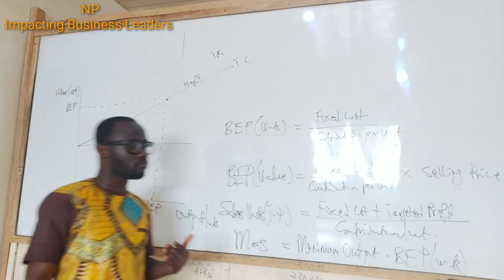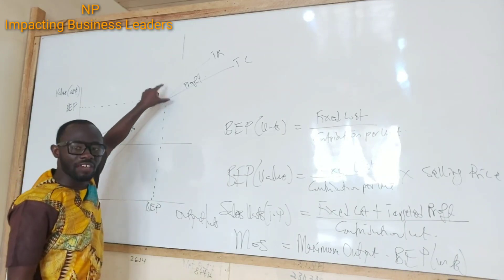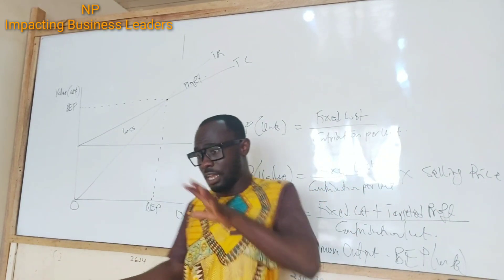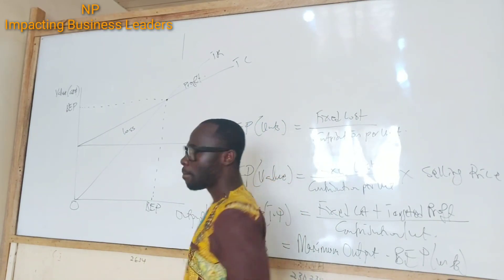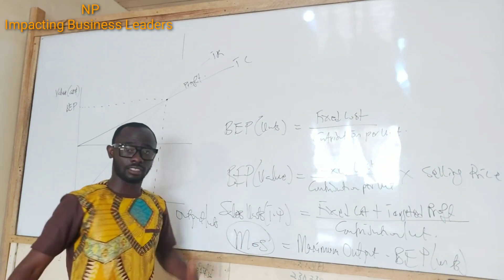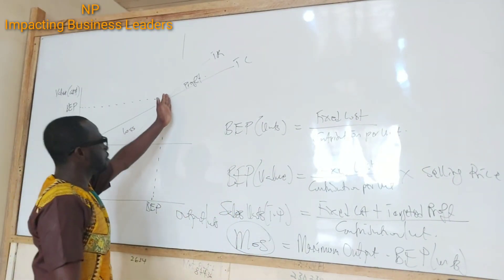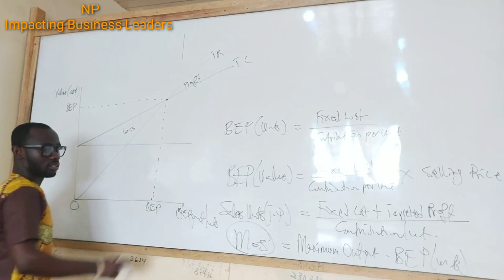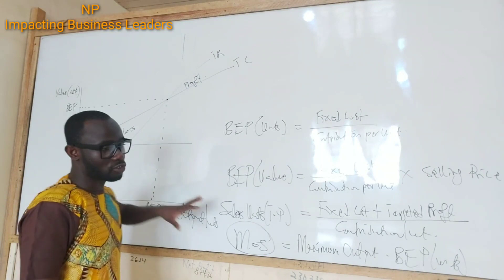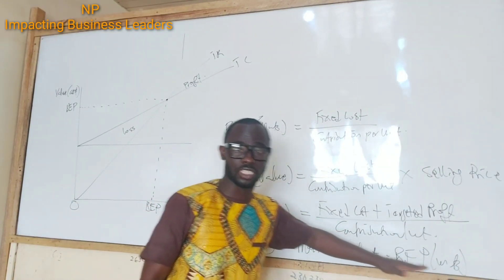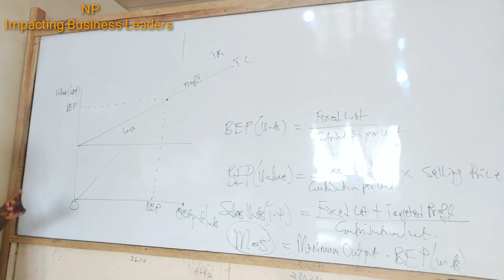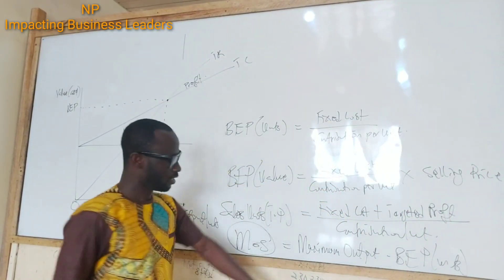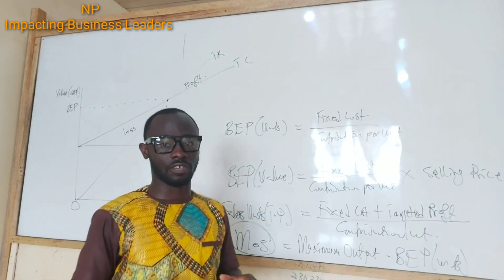The sweet spot is the region referred to as the MOS — the margin of safety — that is the point at which you start making profit. If your maximum output is here and you subtract the break-even point in units from your maximum output, that gives you the margin of safety. So maximum output minus break-even point in units equals the margin of safety.